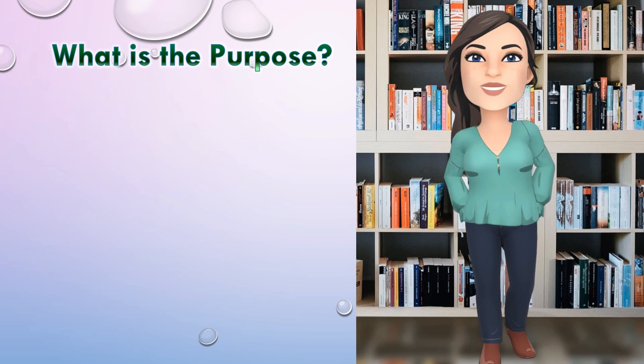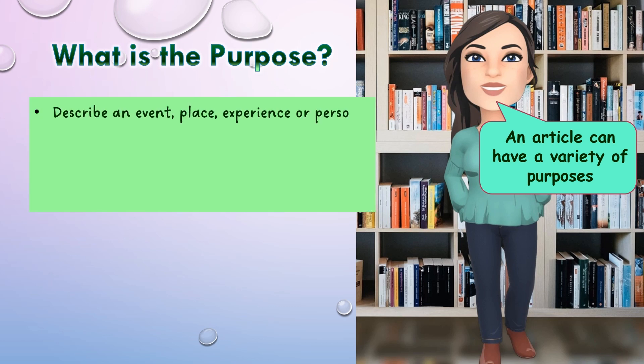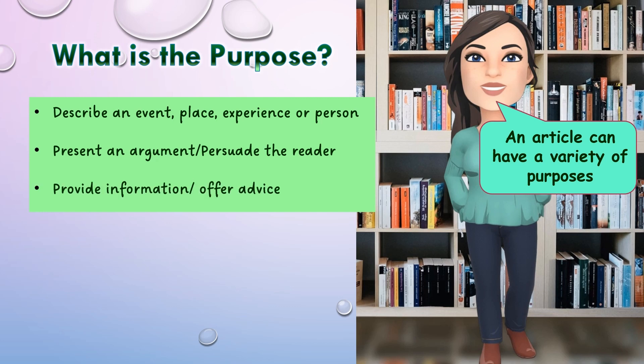So what's the purpose of an article? Well, an article can have a variety of purposes. It can describe an event, place, experience or even a person. It can present an argument or persuade the reader in some way. Or it could just provide information and offer advice.